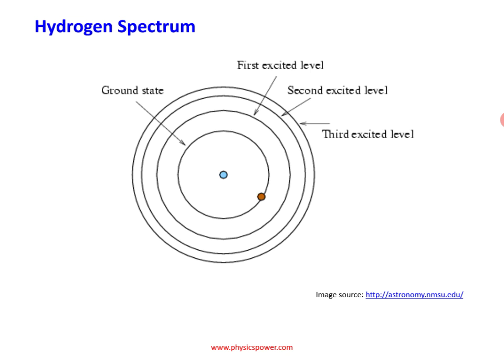Consider a hydrogen atom — at the center is the nucleus, around which are different energy states: the ground state, then the first excited state, second excited state, third, fourth, fifth, and many more. If you give energy to the electron, it can go to the first, second, or third energy state, and afterwards from that higher energy state, the electron again loses its energy and comes back to ground state.